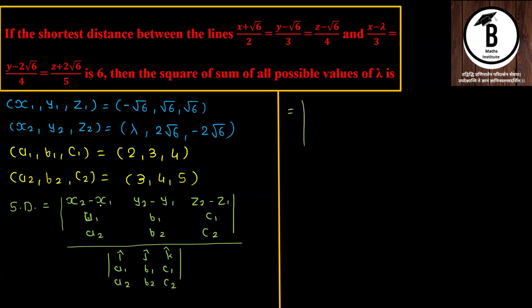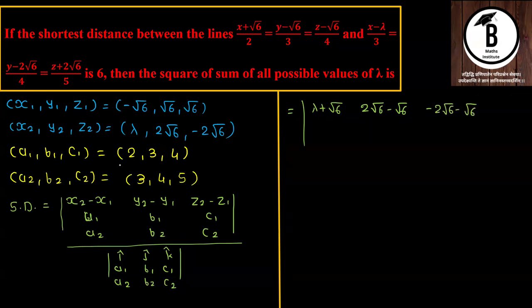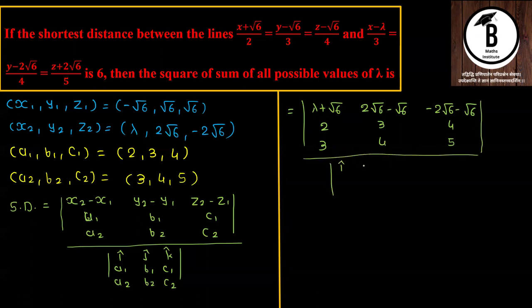Putting in values: x₂ − x₁ = λ − (−√6) = λ + √6; y₂ − y₁ = 2√6 − √6 = √6. Direction ratios a₁ b₁ c₁ = 2, 3, 4 and a₂ b₂ c₂ = 3, 4, 5. The denominator determinant uses i j k with rows 2 3 4 and 3 4 5.